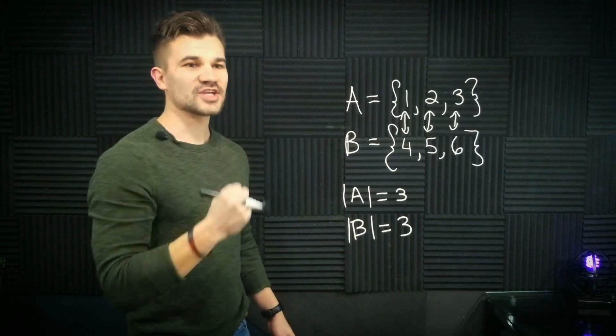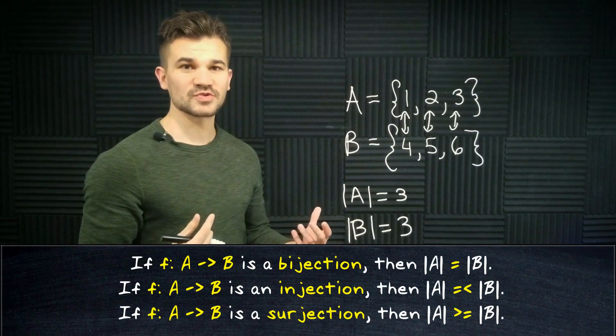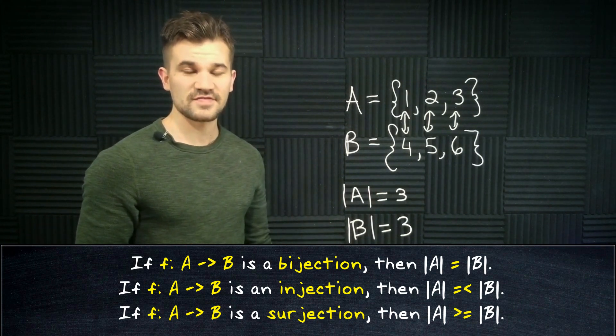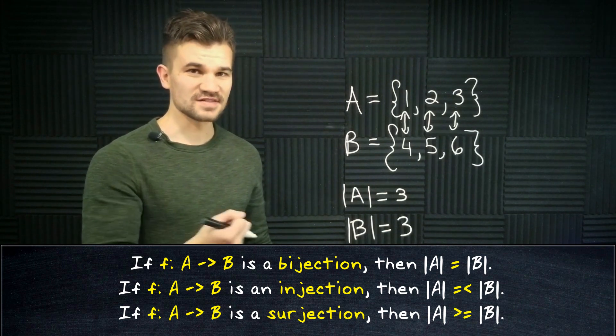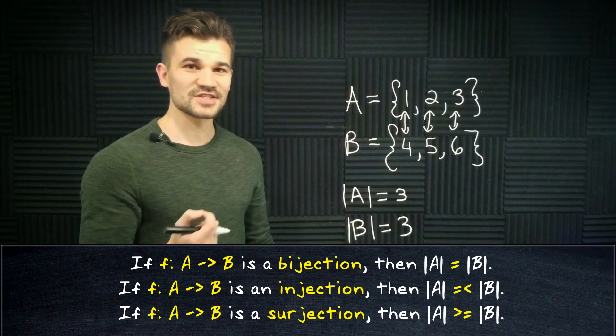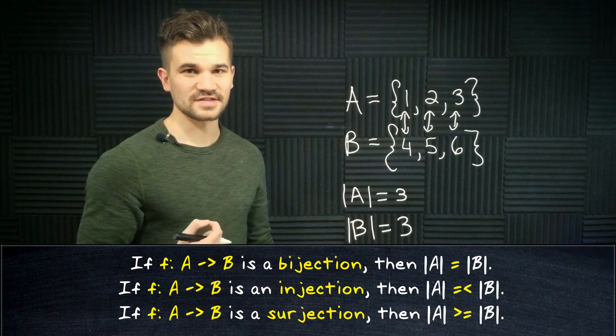In other words, there's a bijection from A to B. If two sets have a function between them that's a bijection, it means they have the same cardinality. If there is an injection from A to B, it means that the cardinality of A is less than or equal to the cardinality of B. And if there's a surjection from A to B, it means that the cardinality of A is greater than or equal to the cardinality of B.